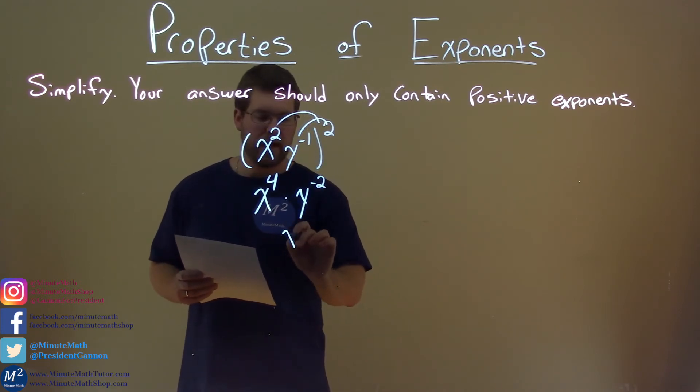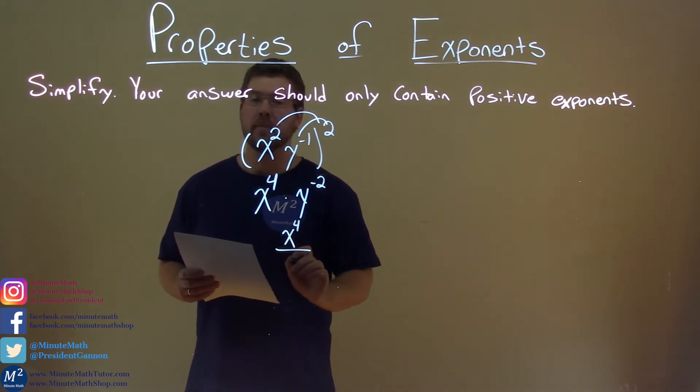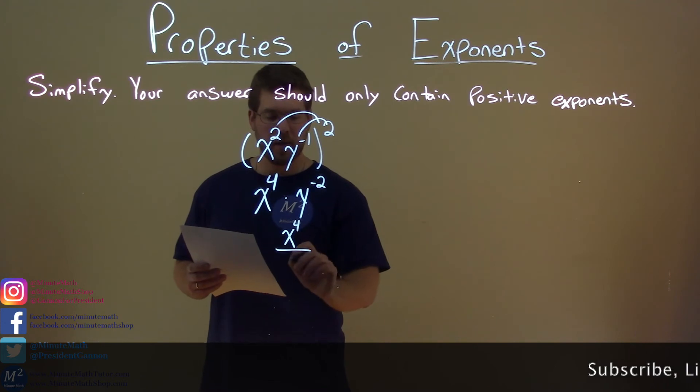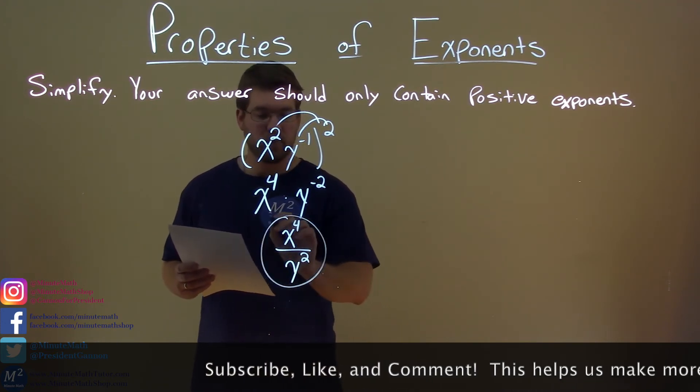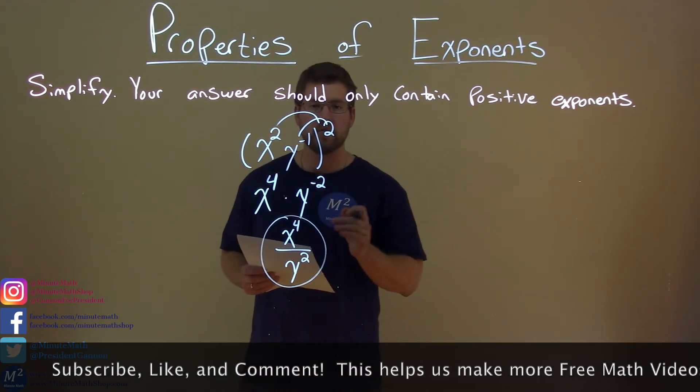So we keep the x to the fourth in the numerator, and then the denominator, let's bring down the y. That is now to a positive power, and there's our answer, x to the fourth over y squared.